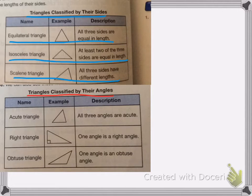When we're talking about angles, acute triangle means all the angles are acute, which means less than 90 degrees. A right triangle just means that one angle is at a right angle, and the obtuse triangle means that one angle is an obtuse angle, which means it's greater than 90 degrees.